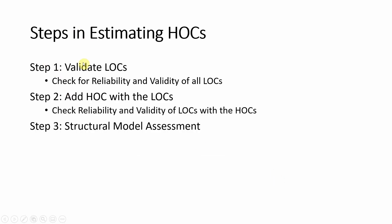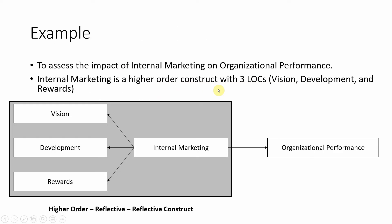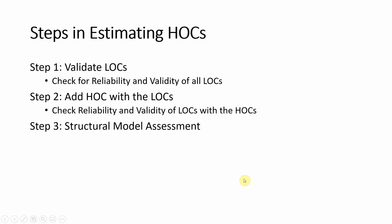Now there are a few basic steps that one has to follow. Step 1 is that you have to validate all your lower-order constructs. You have to create one separate file in SEMinR or in R, whereby you assess the reliability and validity of all lower-order constructs. This file will include vision, development, rewards, and organizational performance. We will not have the higher-order construct internal marketing for now — we are just assessing all the lower-order constructs.